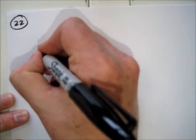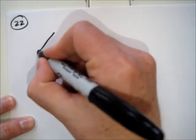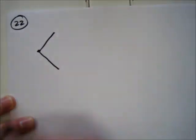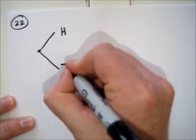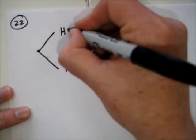First, we're supposed to construct a tree diagram showing all the possible outcomes. A tree diagram starts from a root and has several branches, hence the name tree diagram. The two things we're doing in this case are flipping a coin and then selecting a number. The first option gives you two paths to follow down.